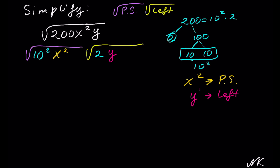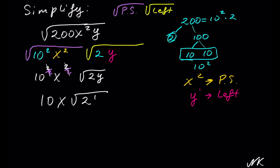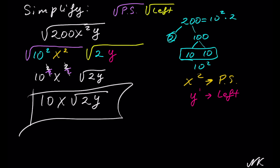So we have square root of 10 squared times x squared, times square root of 2y. We can take 10²x² and divide both powers by 2 using the rational exponents rule. The exponents simplify to 1 and we get 10x times square root of 2y as our solution. That's all.